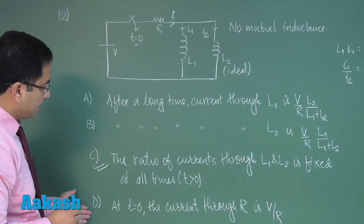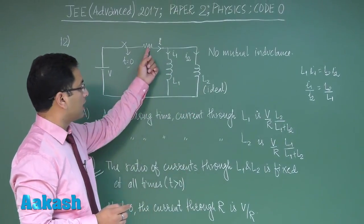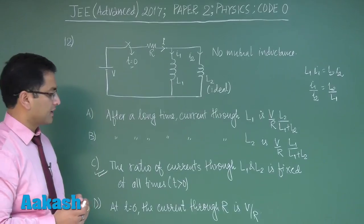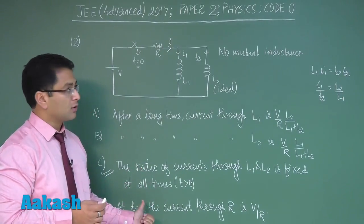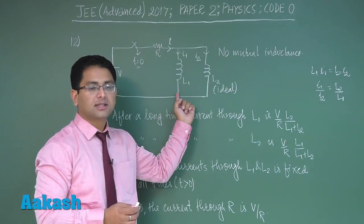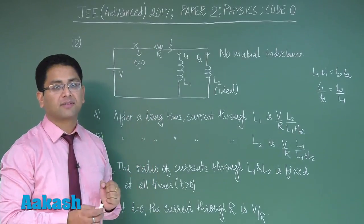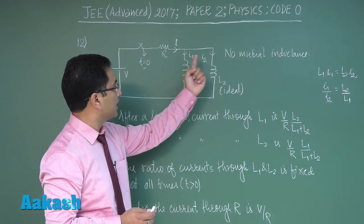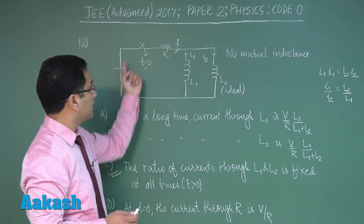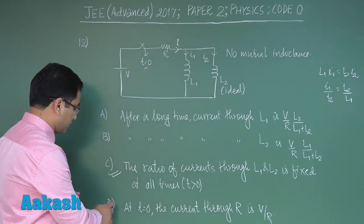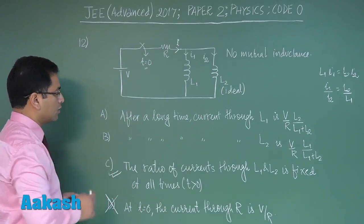Let's see option D: at t equals to zero current through capital R is V by R. This is incorrect because at t equals to zero these two inductors behave like open circuits, and if the circuit is open here, the current through capital R has to be zero. Then option number D would be ruled out.